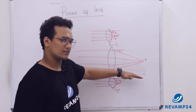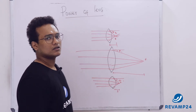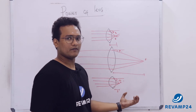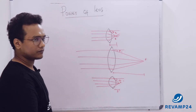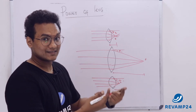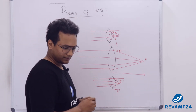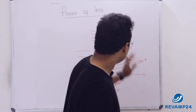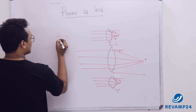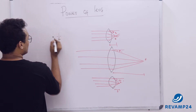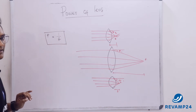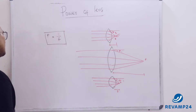This ray was supposed to go in one direction but is now bent to another direction. Higher is the bending power, higher would be the power of the lens. We have seen that smaller is the focal length, larger is the bending power. When the focal length increases, power decreases; when focal length decreases, power increases. So power has been defined as the inverse of focal length.